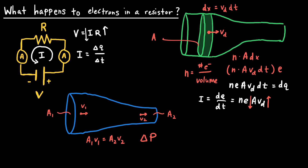The last thing I'd like to point out is that what we've been discussing is consistent with the equation R = rho L over A, where rho is the resistivity of the resistor — which depends on the material and the temperature — L is the length of the resistor, and A is the cross-sectional area. This is consistent with what we've been talking about because it shows that if the cross-sectional area decreases, then the resistance increases. This supports the idea that we can model a resistor as a thinner wire: a smaller cross-sectional area means higher resistance.